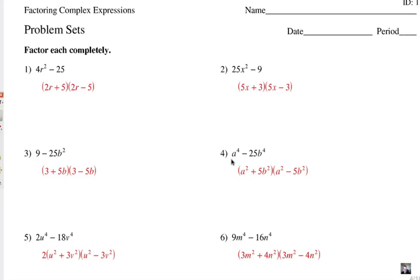Here we have to the fourth power, fourth degree binomial there. Notice it's a squared times a squared, 5b squared times 5b squared and then your plus minus pattern.